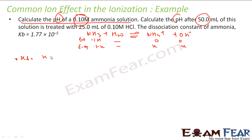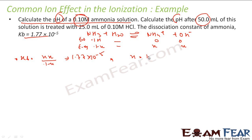First, let's find the initial pH. We define the OH− concentration using Kb. Kb equals NH4+ concentration times OH− concentration divided by NH3 concentration, which is x squared divided by (0.1 − x). The given Kb is 1.77 × 10⁻⁵. Solving this gives x = 1.33 × 10⁻³, and x is nothing but the OH− concentration.